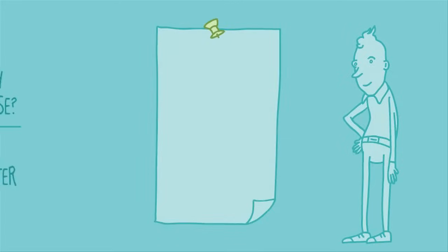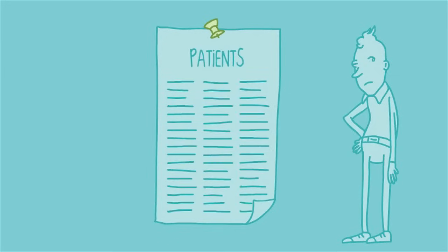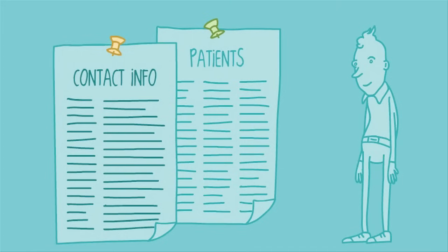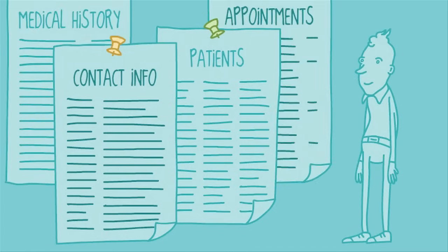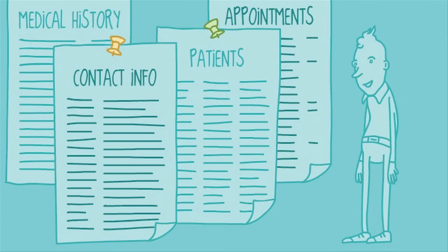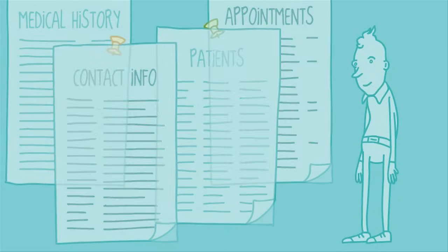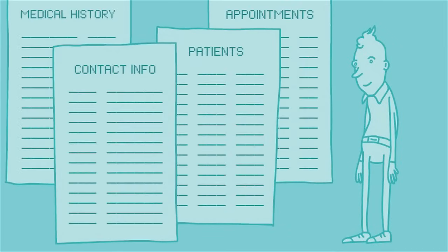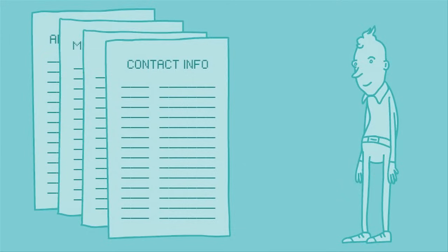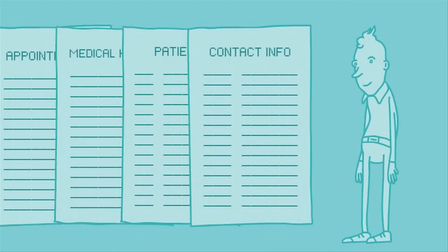Let's think about that. Before computers, what sort of paper records do you think the doctor's office kept on file? Certainly a list of patients and their contact information. Also, their medical history and a list of past appointments. That's how databases work, from the simplest to the most complex — they're basically a collection of lists. Not on paper, but on your computer, where programs like Access make it possible to organize your data, make it searchable, and so much more.